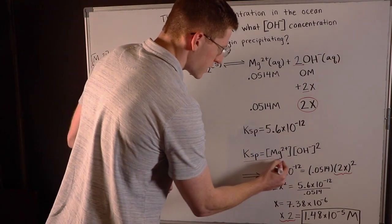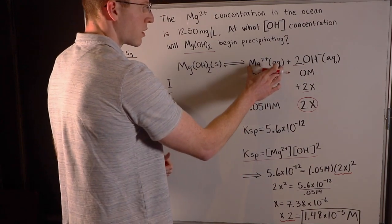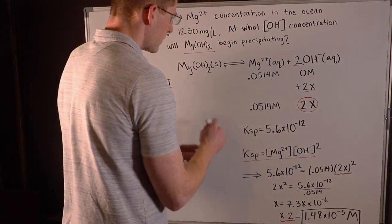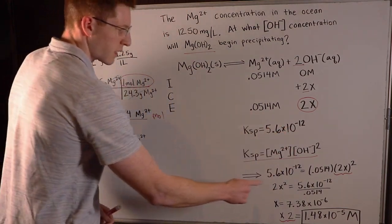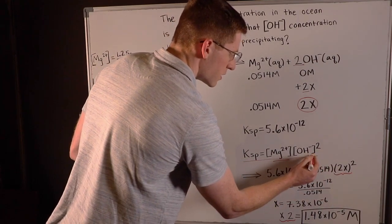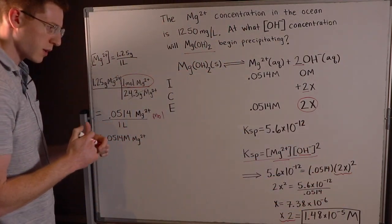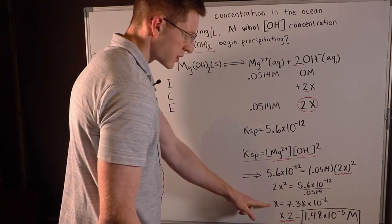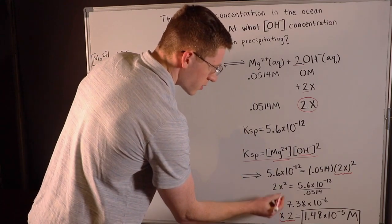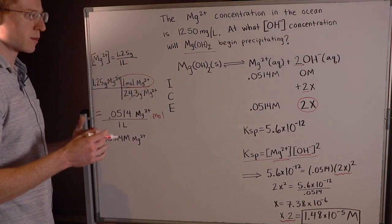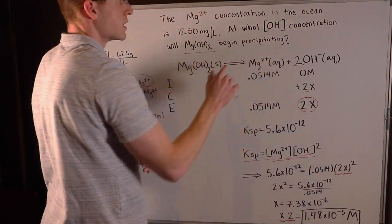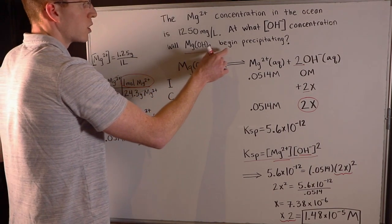The KSP of magnesium hydroxide from our table is 5.6 × 10⁻¹². Setting this equal to the equilibrium concentration of Mg²⁺ times (2X)², we then do algebra to isolate X. We find X equals 7.38 × 10⁻⁶. Since we want 2X — because there are two hydroxide ions produced — we multiply by 2 to get 1.48 × 10⁻⁵ molar, which is the hydroxide concentration precisely at the point where magnesium hydroxide begins precipitating.